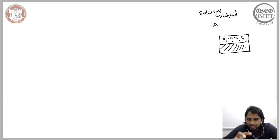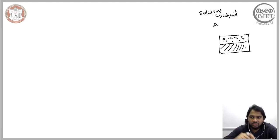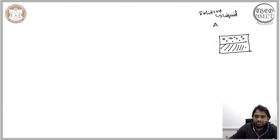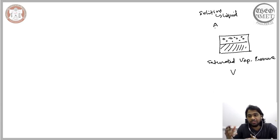The vacuum is not an energetically stable state, so some portion of liquid A gets converted into vapor to replace the vacuum. Once a certain degree of vapor pressure is achieved, an equilibrium is established between the liquid and the vapor surrounding it. This specific degree of vapor pressure is referred to as the saturated vapor pressure, P°_A, and it depends on the material being considered.